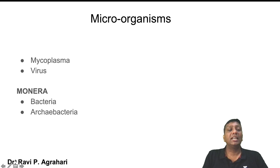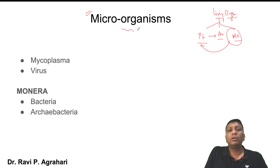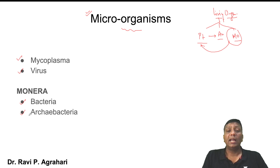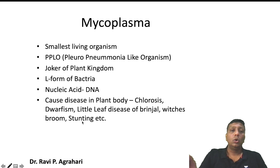After Whittaker's classification, we move to the next concept: microorganisms. Among living organisms there are three groups — plants, animals, and microorganisms. In this part we discuss microorganisms. The microorganisms covered here are mycoplasma, viruses, bacteria, and archaebacteria. Bacteria and archaebacteria are examples of Monerans. Mycoplasma and viruses will be discussed now, while bacteria and archaebacteria will be covered in the next lesson as they require a separate video.